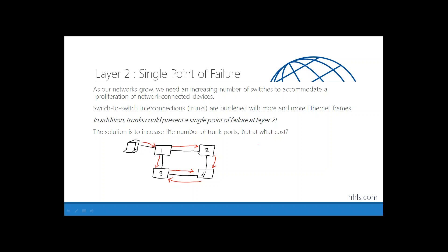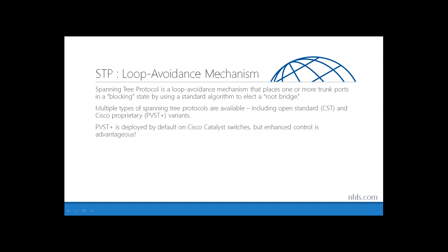We increased the number of trunk ports to avoid a single point of failure between two switches, but as a result we've introduced the inevitability of a broadcast storm seriously impacting our layer two network performance. The solution is STP — Spanning Tree Protocol — a loop avoidance mechanism that places one or more trunk ports into a blocking state by using a standard mathematical algorithm to elect a root bridge, the primary switch in our layer two environment.